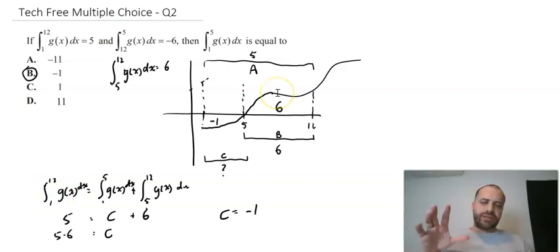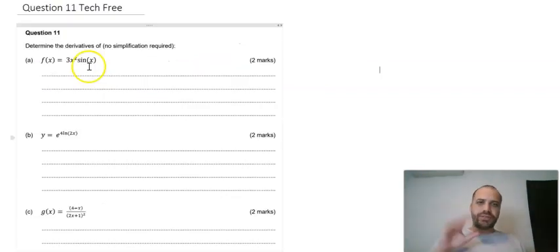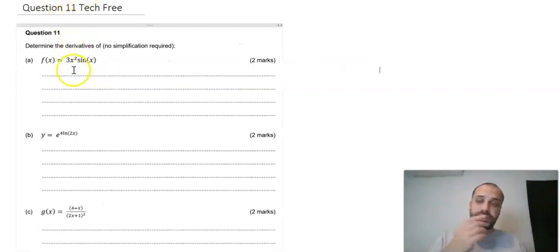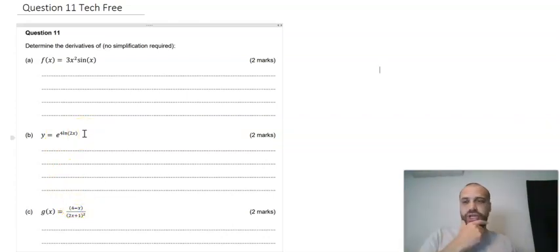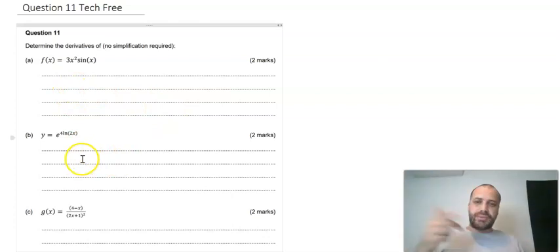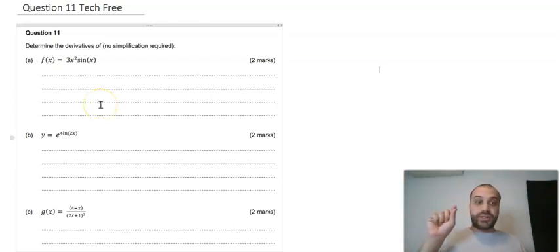I'm going to skip the other multiple choice — I'll do those in other videos. Now I'm going to do two short response questions from tech-free, so we're still not touching the calculator. It feels almost certain that question 11 of tech-free is going to be finding derivatives — of sine, natural log, e — and product rule, quotient rule, and chain rule style questions. There are six marks here so expect about three minutes per part. Pause the video, put nine minutes on the clock, and try all three.